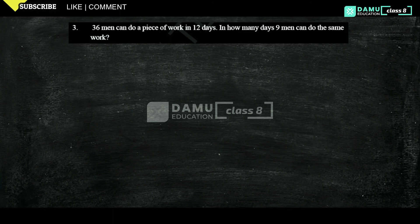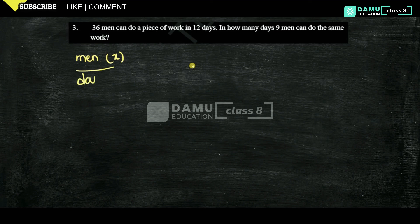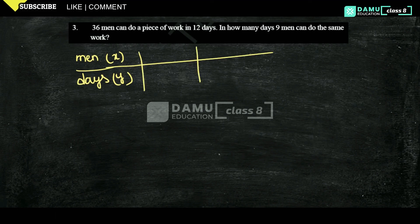Hello viewers, thanks for watching our videos. If not yet subscribed, please subscribe and click the bell icon. In this module, we are going to discuss: 36 men can do a piece of work in 12 days. In how many days can 9 men do the same work? Let number of men be x and number of days be y. We have x1, y1 and x2, y2.